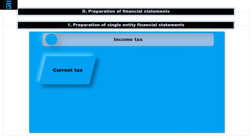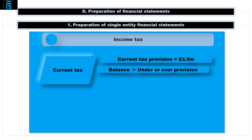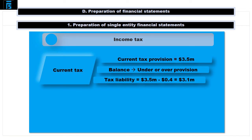We are told in note 5 that the required level of provision for current tax in respect of the year ended 31st of March 2015 is $3.5 million, and that the balance on current tax in the trial balance represents the under or over provision of the tax liability for the previous year. When we inspect the trial balance, we discover a credit balance of $400 in respect of current tax, implying that the previous year's tax liability had in fact been over-provided by this amount. Accordingly, for the tax liability in the statement of financial position to reach the required level, we only need to book a current tax expense of $3,100.